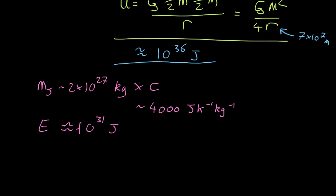So this means if we compare it with this, we have enough energy to raise everything by 10 to the 36 over 10 to the 31, so by about 10 to the 5 degrees. So if you started at absolute zero, it would be a hundred thousand degrees by the time we finished.